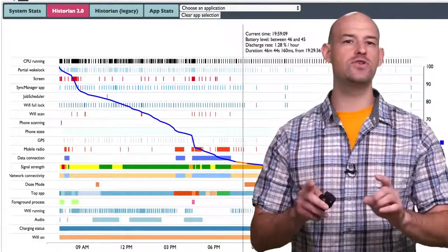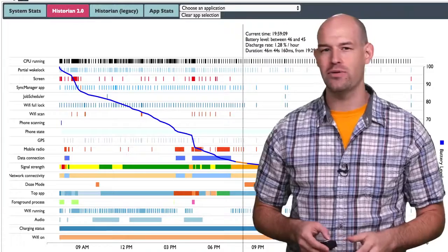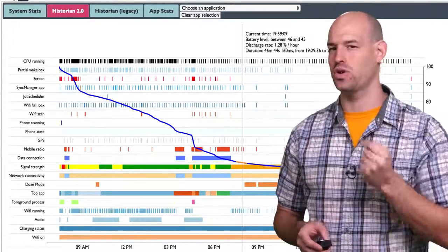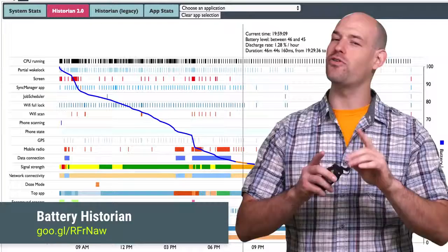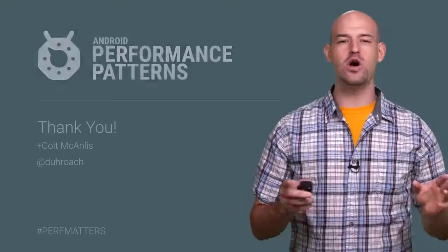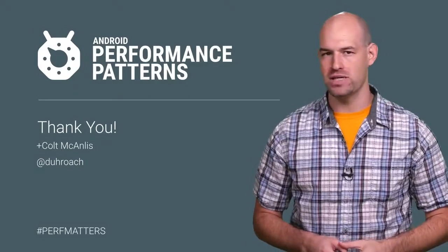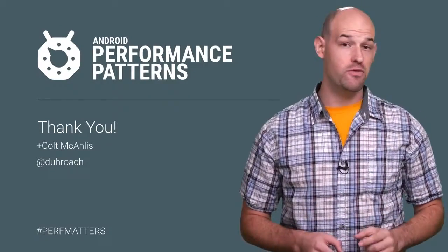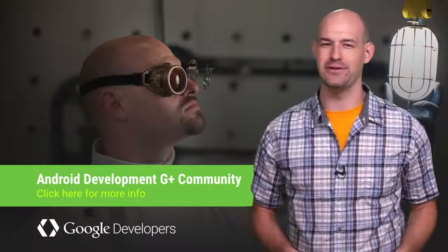Now, if you're ever confused about how your application is eating through battery, always be sure to take a hard look at the battery historian tool. It will happily remind you of all the things you're doing wrong and give you hints on how to get them fixed. So don't get lost in the world of battery performance. Make sure you check out the rest of the Android Performance Patterns videos and join our Google Plus community to ask questions from other great performance experts. So keep calm, profile your code, and always remember, perf matters.